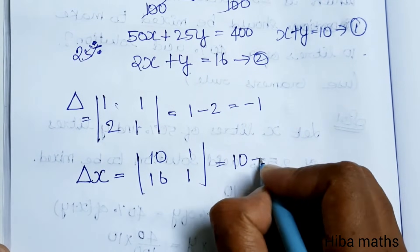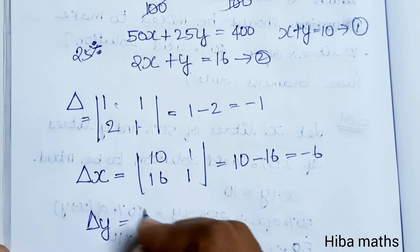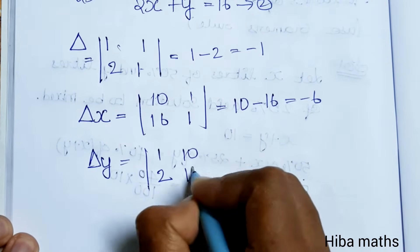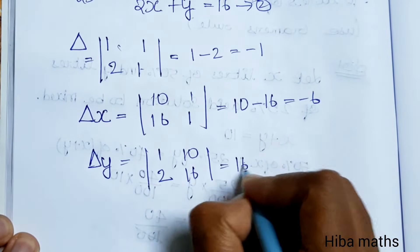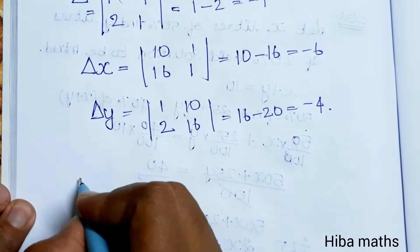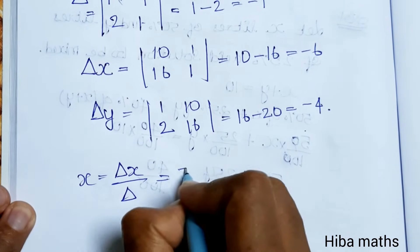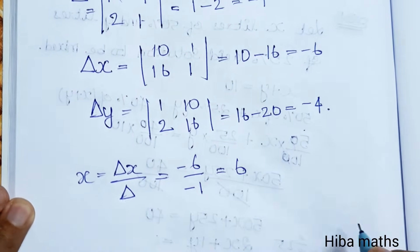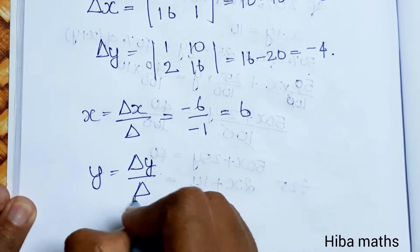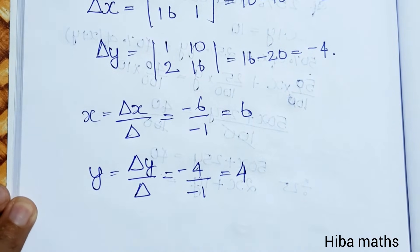Using the determinant method, the determinant D gives a value. The determinant for y uses the first and second columns with values 10 and 16, giving 16 − 20 = −4. So x = determinant x / D = −6 / −1 = 6, and y = determinant y / D = −4 / −1 = 4.